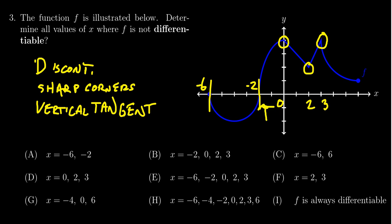Also, vertical tangent lines—the function is continuous at this point but doesn't have the derivative at that point. So the numbers we need to throw out are negative six, negative two, zero, two, and three, which leads to the correct response being E.